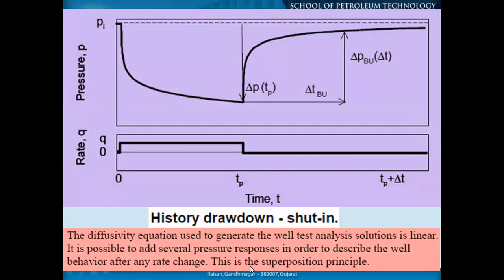Looking at the graphs: this is the history of drawdown. If you produce for a longer time — this is t_p — and subsequently produce for five or ten years, all the production values will be considered in calculating t_p. The diffusivity equation used to generate the well test analysis solution is linear, and this is how we try to get certain information from the interference part.